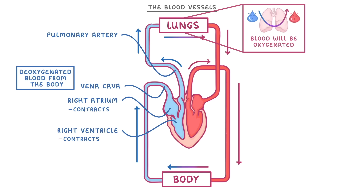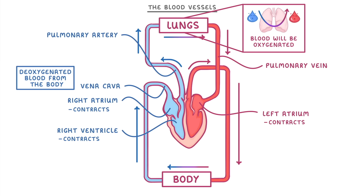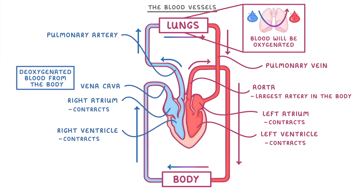The blood then leaves the lungs by the pulmonary vein, which carries it to the left atrium. Once it's full, the left atrium contracts, pumping the blood down into the left ventricle, which after a short delay also contracts and pumps the blood into the aorta — the largest artery in the body. The blood from the aorta then travels around the body to our tissues where it exchanges gases and nutrients, and then comes back to the heart via the vena cava to restart the cycle all over again.